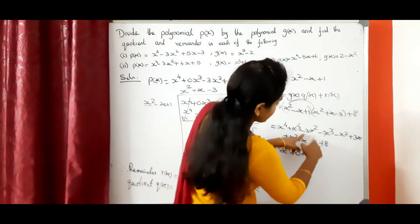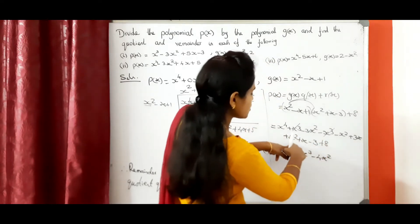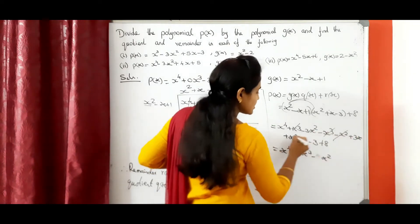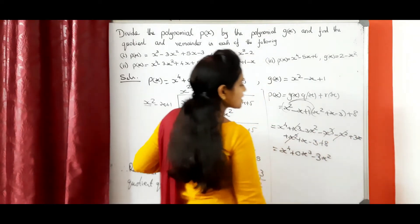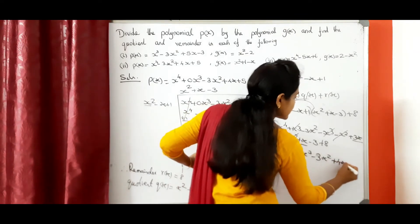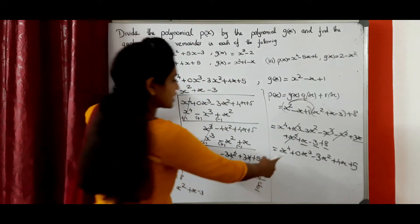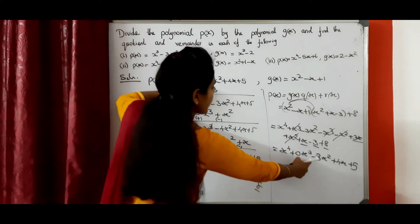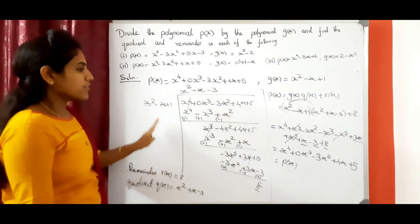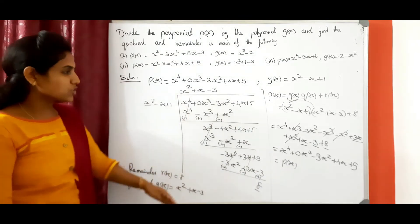Next, X square terms: minus 3 X square minus X square plus X square — the minus X square and plus X square cancel, leaving minus 3 X square. Then X terms: 3 X plus X gives 4 X. Constant term: minus 3 plus 8 equals plus 5. This gives us X power 4 plus 0 X cube minus 3 X square plus 4 X plus 5, which is equal to P of X. Therefore, we have verified our answer is correct. Every problem, better you do the verification — you need to get P of X; then only it is correct. Otherwise, somewhere we made a mistake and we need to check one more time.